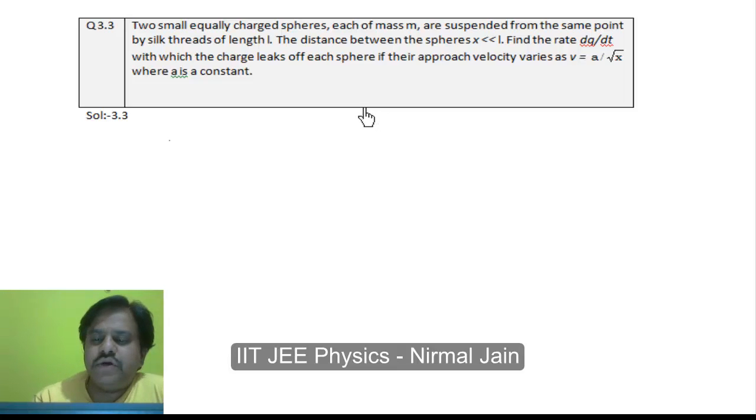Here we are dealing with question 3.3 of Erodo. We are told that two small equally charged spheres, each of mass M, are suspended from the same point by silk threads of length L.